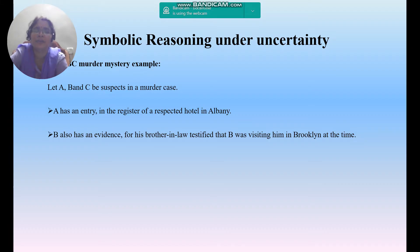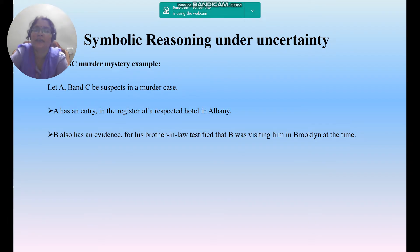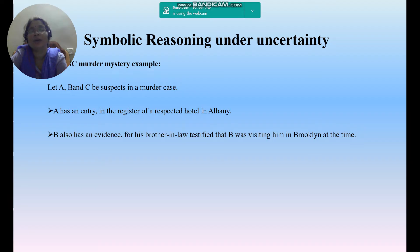All three are considered suspects, and everyone believes that any one or all three of them participated in the murder. A has an entry in the register of a respected hotel in Albany — meaning A is showing his own evidence that he was not at the scene at that particular point in time.